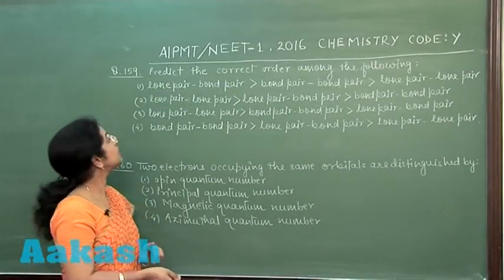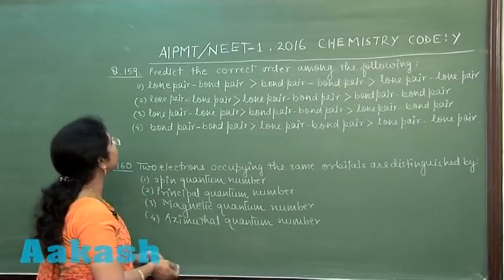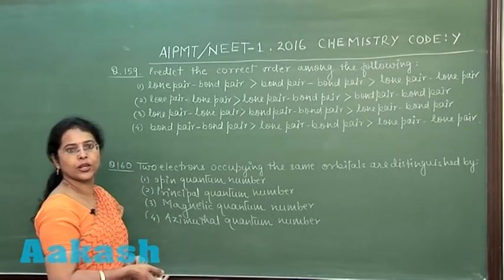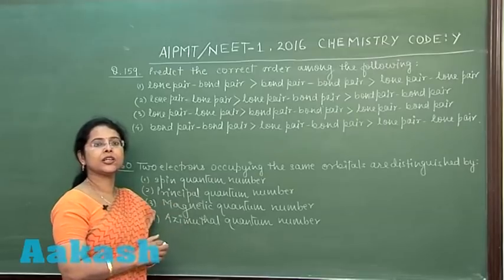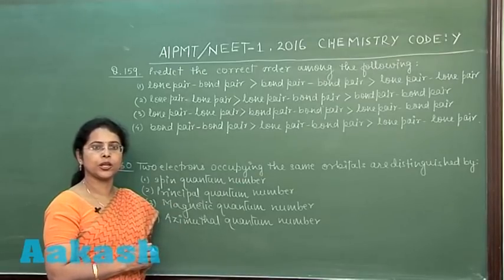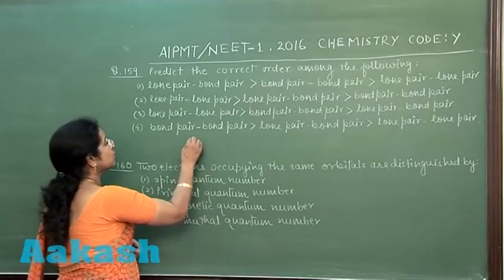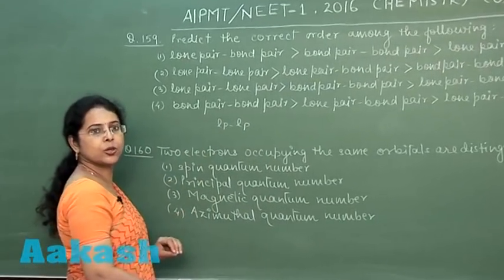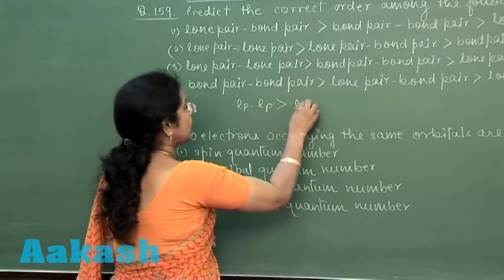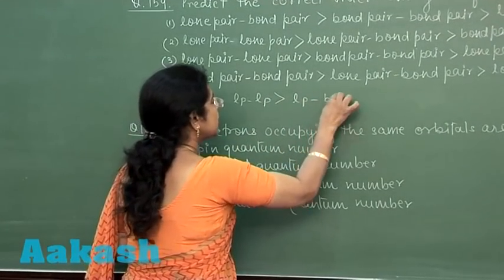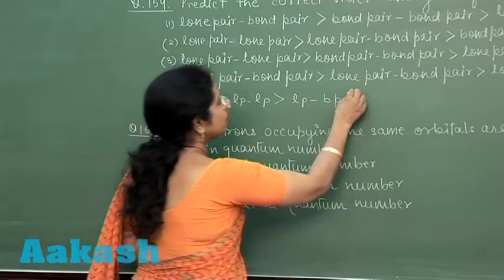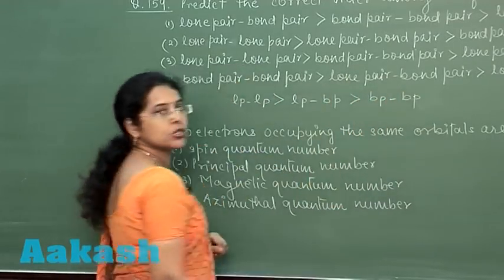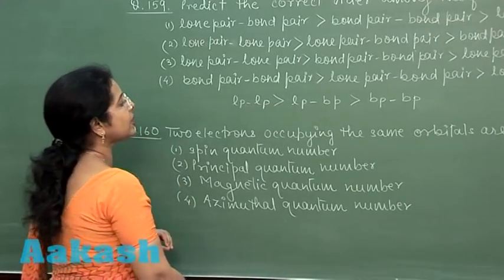The next question, question number 159, asks to predict the correct order among the following options. According to VSEPR theory, lone pair–lone pair repulsion is the strongest, lone pair–bond pair repulsion is weaker, and bond pair–bond pair repulsion is the weakest.